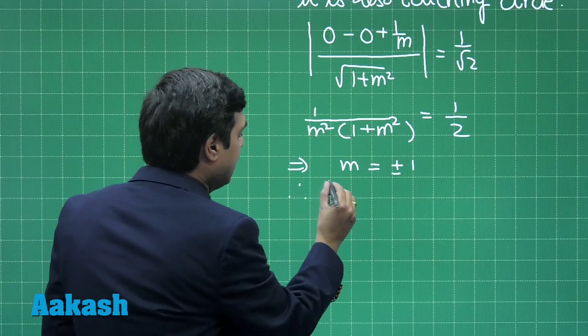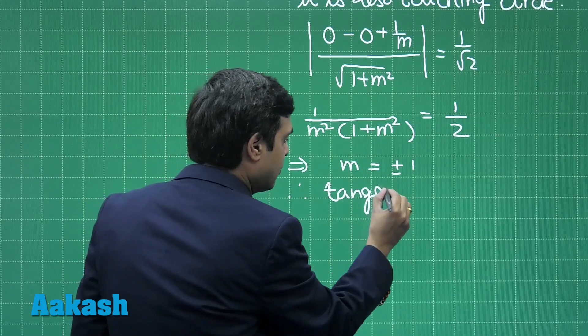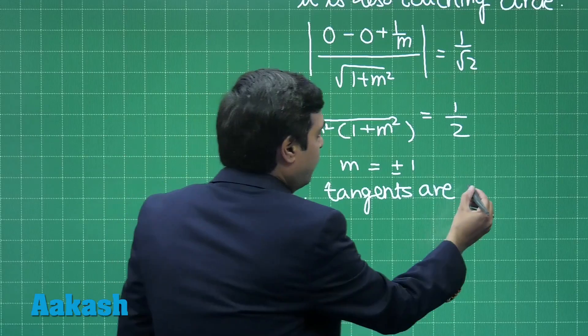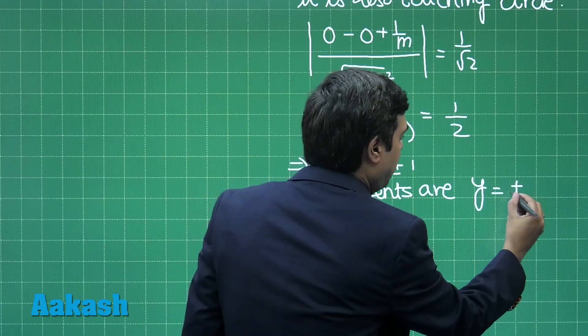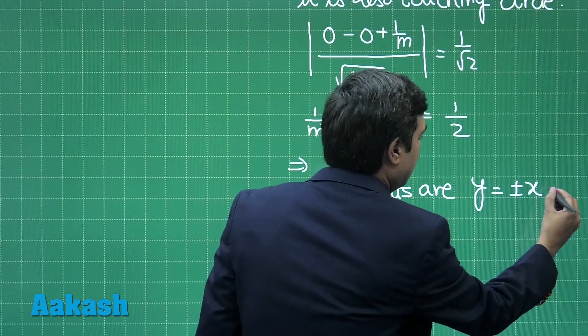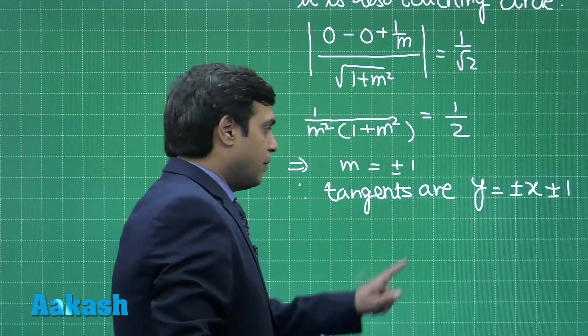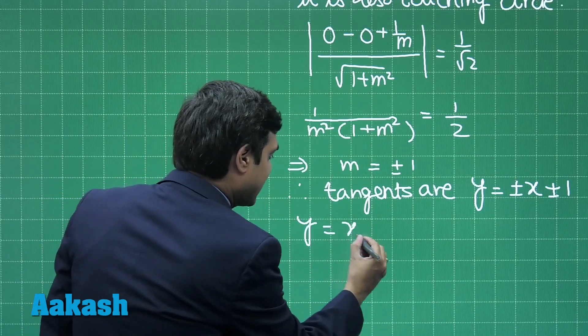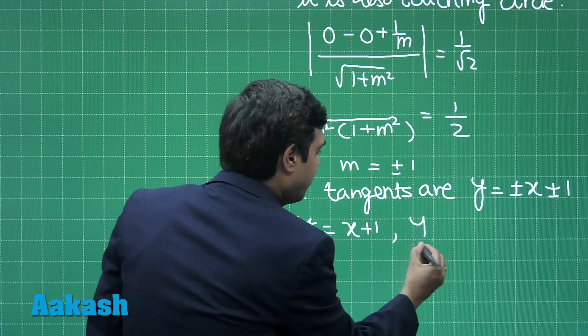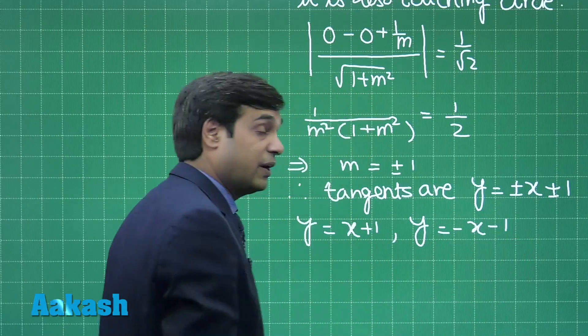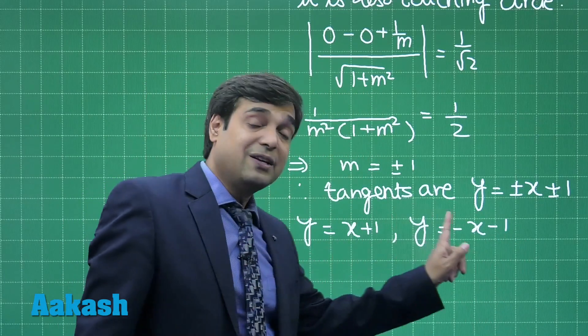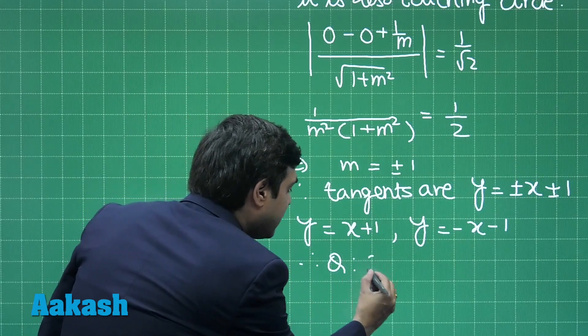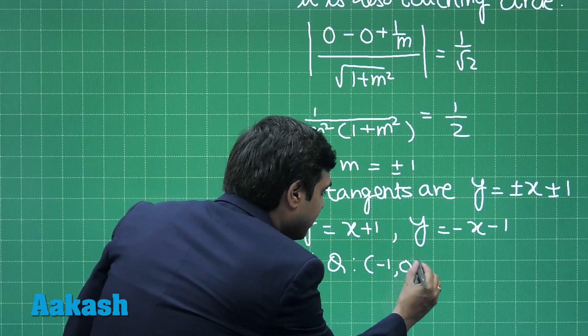Therefore, tangents are y = ±x ± 1, plus together and minus together, that is y = x + 1 and y = -x - 1. The point of intersection of these two lines is Q, therefore the coordinates for Q are obtained as (-1, 0).